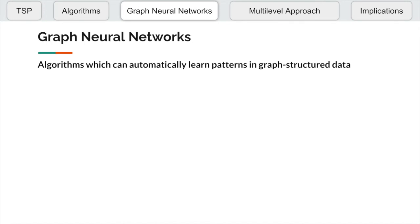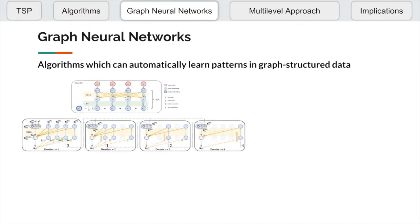Lately, graph neural networks have been used to automatically learn these heuristics by looking at the patterns in graphs. These GNNs are faster than non-learned methods and they solve TSP instances with up to 100 nodes in just 6 seconds with a very low optimality gap.